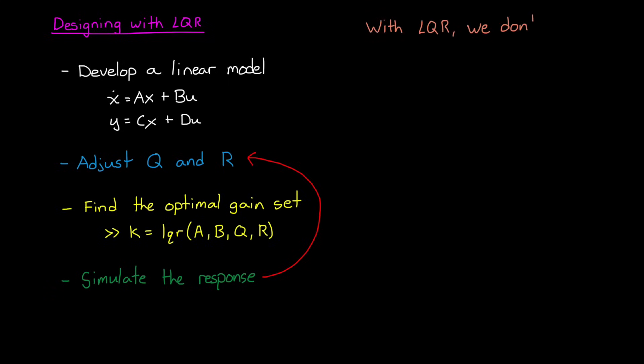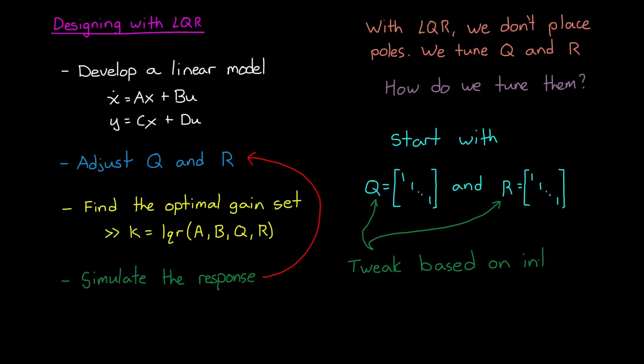Now, with LQR, we've moved the design question away from where do we place poles to the question how do we set q and r. Unfortunately, there isn't a one-size-fits-all method for choosing these weights. However, I'd argue that setting q and r is more intuitive than picking pole locations. For example, you can just start with the identity matrix for both q and r, and then tweak them through trial and error and intuition about your system. So, to help you develop some of that intuition, let's walk through a few examples in MATLAB.